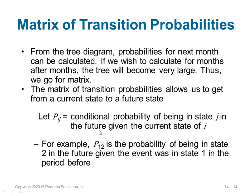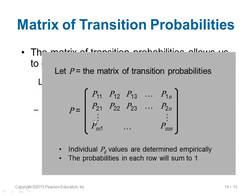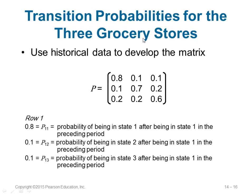P i j is the conditional probability of being in state j in the future given you are currently in state i. So you go from i to j. For example, P 1 2 means you are in state 1 now and going to state 2 next. The matrix of transition probabilities P equals P 1 1, P 1 2, P 1 3 until P 1 N, and similarly for other rows. The sum of probabilities of each row should equal 1.